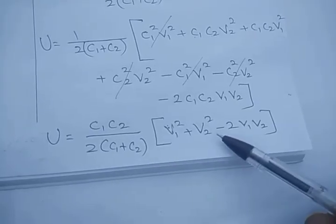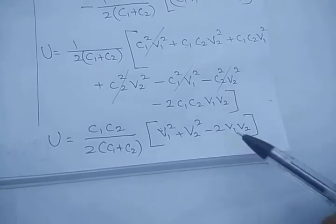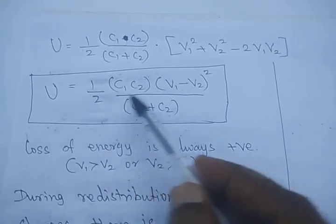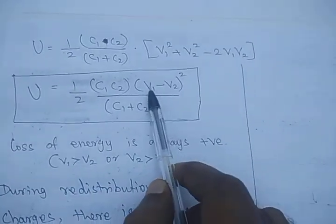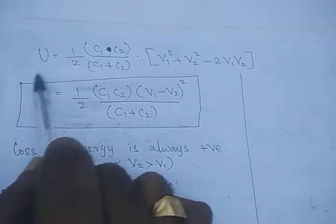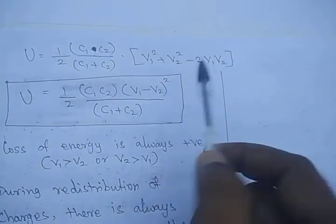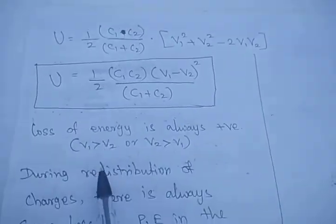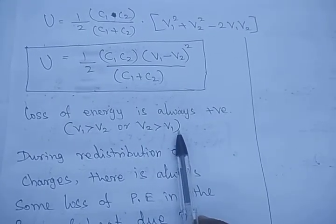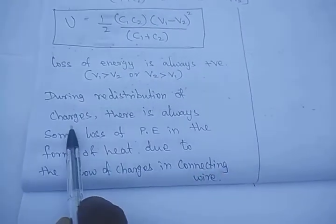This expression V1² + V2² − 2V1V2 is (a−b)² form, which gives (V1−V2)². Thus the loss of energy is ΔU = C1C2(V1−V2)² / [2(C1+C2)]. From this expression we clearly see that whether V1 is greater or V2 is greater, since it is a whole square the loss in energy is always positive. This indicates that during redistribution of charges there is always some loss in potential energy, in the form of heat due to the flow of charges in the conducting wire.